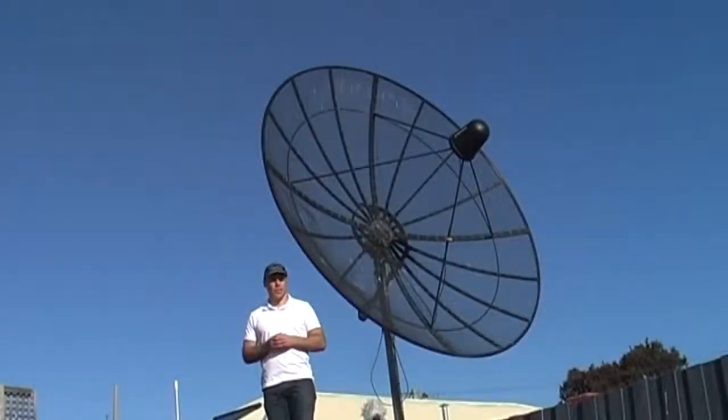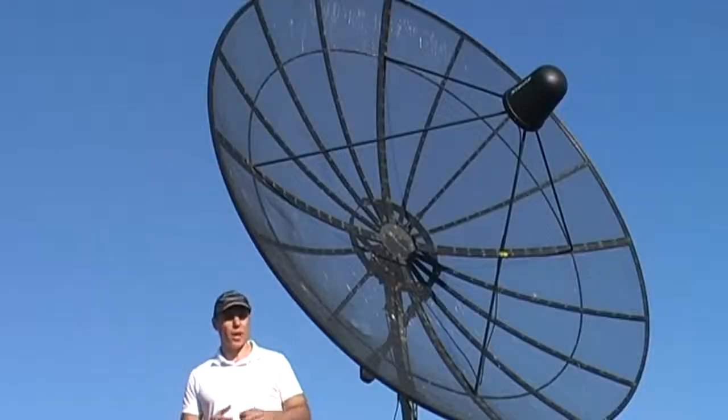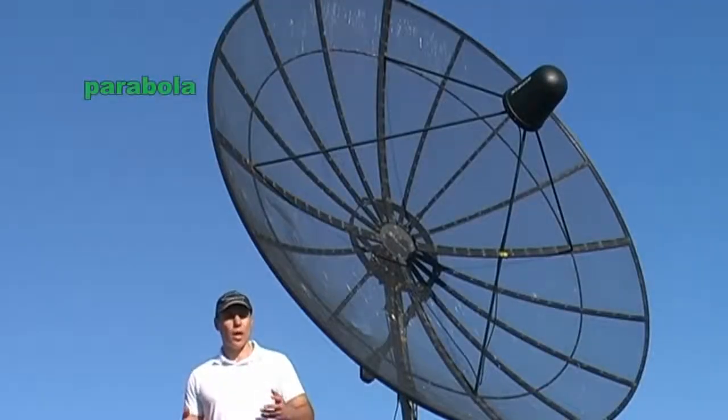Concave mirrors and reflectors used in telescopes and satellite dishes aren't just any old curved shape, and the shape they trace out isn't circular. In fact, concave reflectors like this one curve in the shape of what we call a parabola.